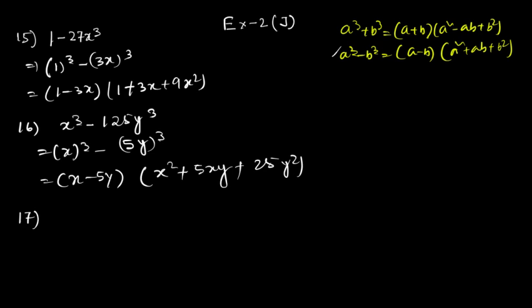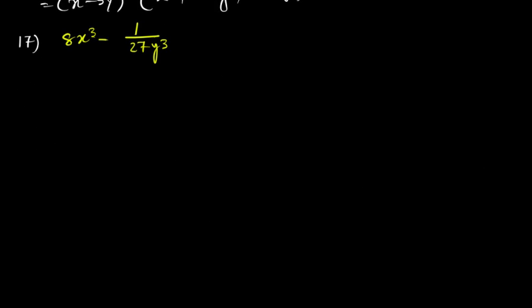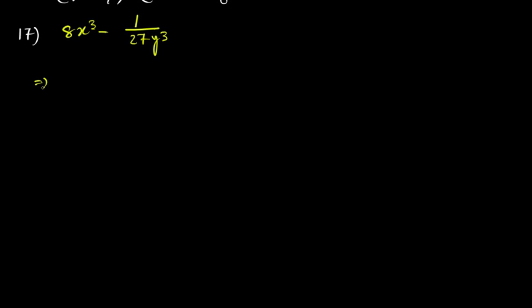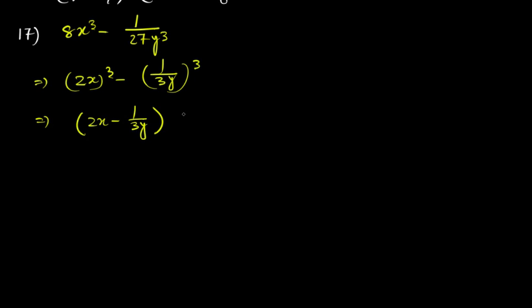Question 17: 8x³ – (1/27)y³ = (2x)³ – (1/3 y)³, which equals (2x – 1/3 y)(4x² + 2x/3y + 1/9 y²).